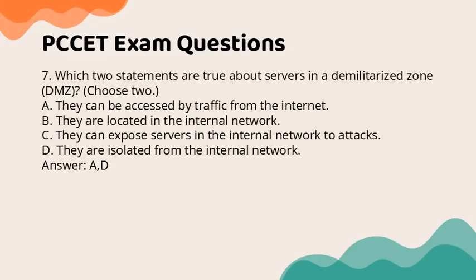Question 7: Which two statements are true about servers in a demilitarized zone (DMZ)? Choose two. a. They can be accessed by traffic from the Internet. b. They are located in the internal network. c. They can expose servers in the internal network to attacks. d. They are isolated from the internal network. Answer: a, d.